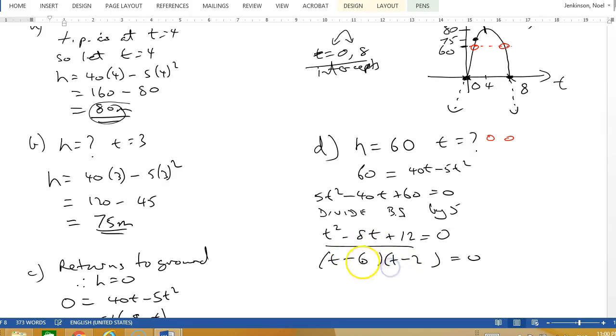Could be 6 and 2s, add to 8, yes. So it's (t minus 6)(t minus 2). Just check: minus 6 times minus 2 is plus 12, adds to minus 8. Therefore t equals 2 or 6 seconds.